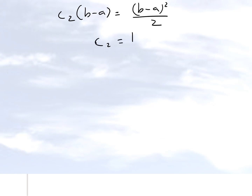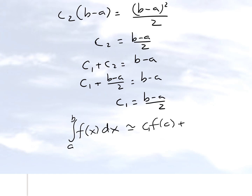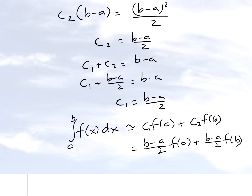From c2*(b − a) = (b − a)²/2, we get c2 = (b − a)/2. Since c1 + c2 = b − a, we get c1 = (b − a)/2 as well. Substituting back into our original assumed formula gives: (b − a)/2 * f(a) + (b − a)/2 * f(b), which is exactly the trapezoidal rule — or equivalently, (b − a) * [f(a) + f(b)] / 2.